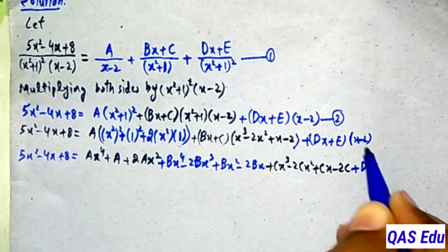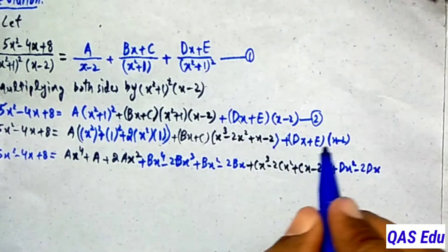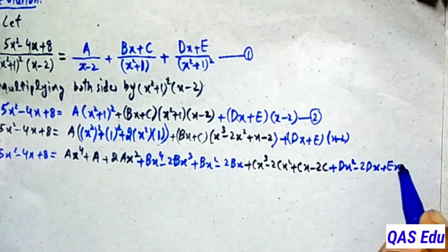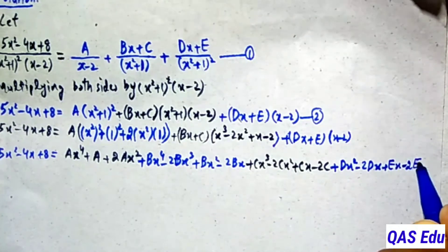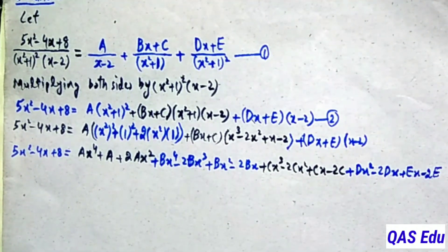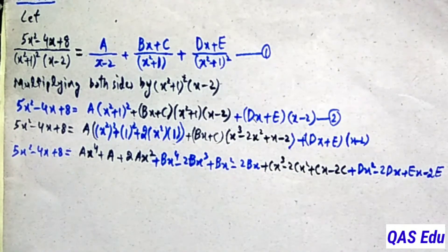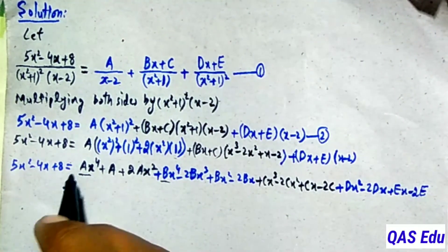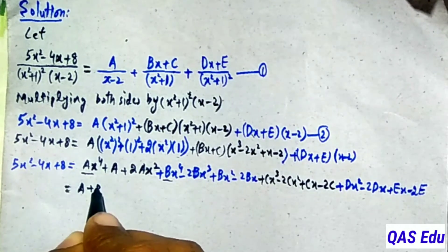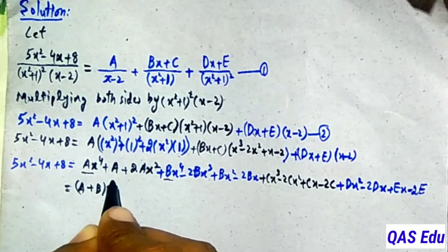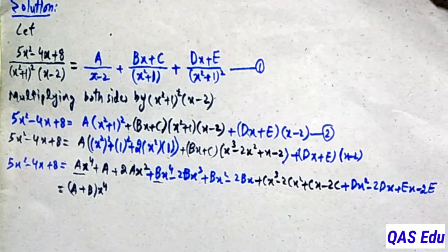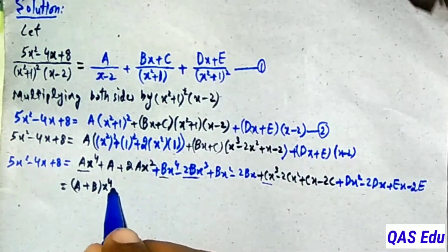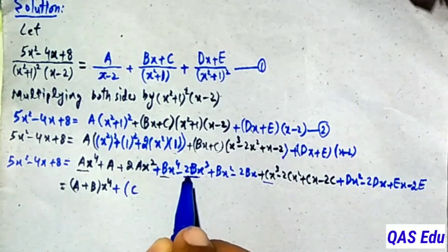Continuing the expansion: Bx times x gives Bx squared, Bx times minus 2 gives minus 2Bx. For the C term: C times x cubed gives Cx cubed, minus 2C times x squared gives minus 2Cx squared, C times x gives Cx, and C times minus 2 gives minus 2C. For Dx times x minus 2: Dx squared minus 2Dx. For E times x minus 2: Ex minus 2E.